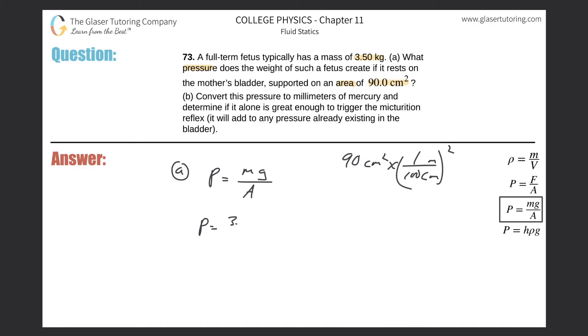The pressure is going to be equal to the mass, which is 3.50, multiplied by gravity of 9.8, all divided by the area in square meters, so that's going to be 90 over 100 squared. Let's throw it into the calculator.